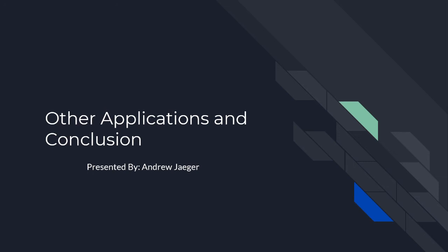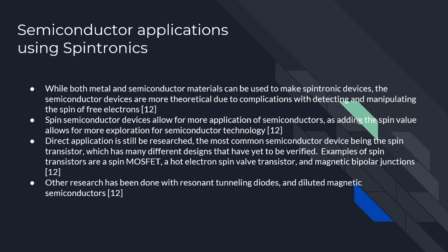Moving on to the semiconductor application of spintronics: while both metal and semiconductor materials can be used to make spintronic devices, the semiconductor devices are in a more theoretical stage, as detecting and manipulating the spin of free electrons is rather difficult. Once achieved, these spin devices allow for more applications of semiconductors, as adding the spin variable gives more room and adds more variables to what you can do. The most common semiconductor device is the spin transistor, with designs including spin MOSFETs, hot electron spin valves, and magnetic bipolar junctions.